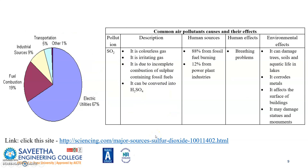The third most common pollutant is sulfur dioxide. Almost 88% of sulfur dioxide comes from burning fossil fuels and 12% from chemical industries. The major issues associated with sulfur dioxide include respiratory problems, and it can even affect the surface of buildings, causing damage to statues and monuments.